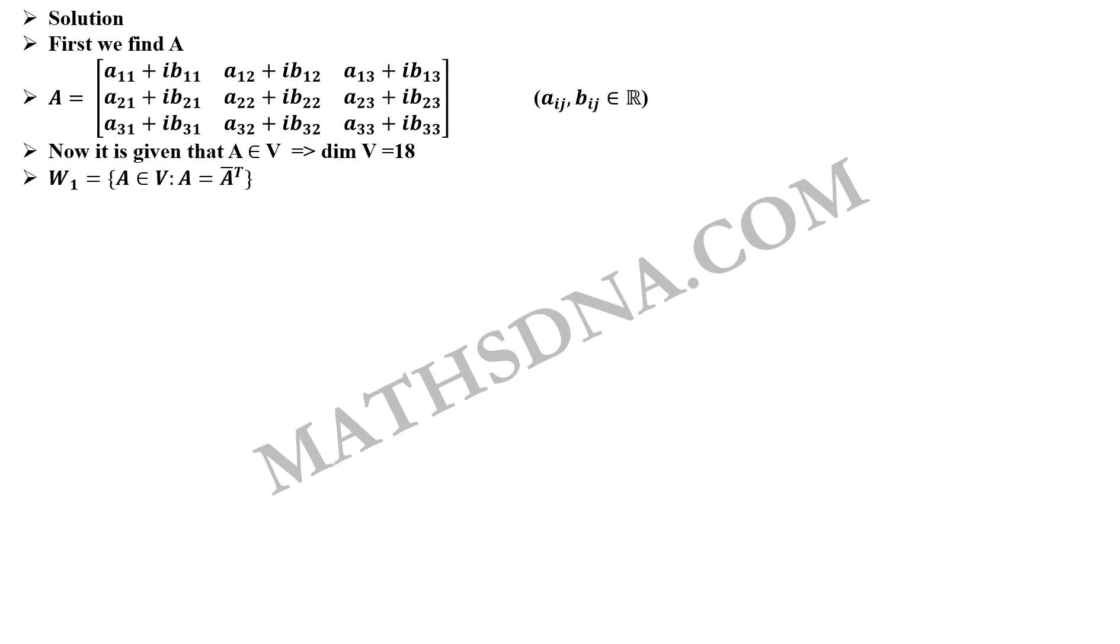Now, for W1 which says that A belongs to V such that A equals to A complement transpose. We already have A, so we find A complement transpose that will be as A11 minus iB11, A12 minus iB12 up to A33 minus iB33.